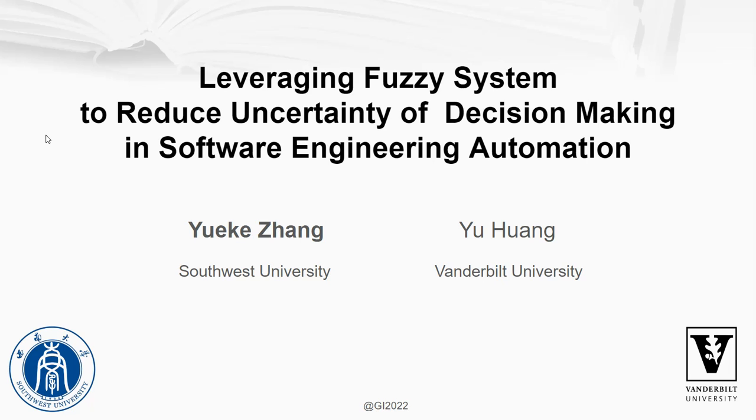Hi, everyone. My name is Yuko Zhang. Our paper reveals the potential for adopting uncertainty decision-making theory to software engineering automation. We try to model and then reduce the uncertainty in fault localization by importing fuzzy theory from operation research.